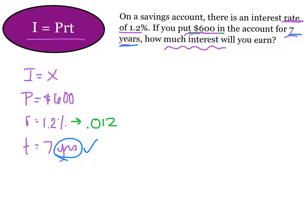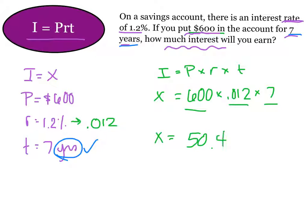So everything is in the right type of format. And now, it's just applying our formula. We can say I equals P times R times T. I is X equals 600 times .012 times 7. P, R, T. When we solve, we end up with X equals $50 and 40 cents. So our interest earned was $50 and 40 cents on our savings account.